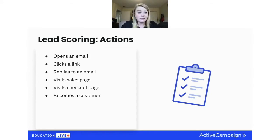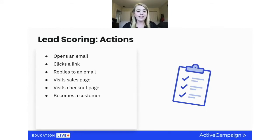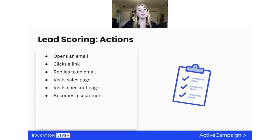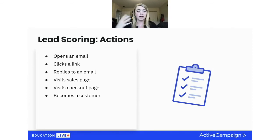If a contact replies to an email, that is going to be worth a lot more points — they're actually asking you a question or have something to say. Visiting a sales page is one where people like to give a good number of points, because if they're looking at the pricing page, you should be giving them a lot of points. Visiting a checkout page is also important — sometimes people reach your checkout page but then leave, which might be a moment for an abandoned cart sequence, and you add lead score points to alert you that this person abandoned the cart and was close to buying.